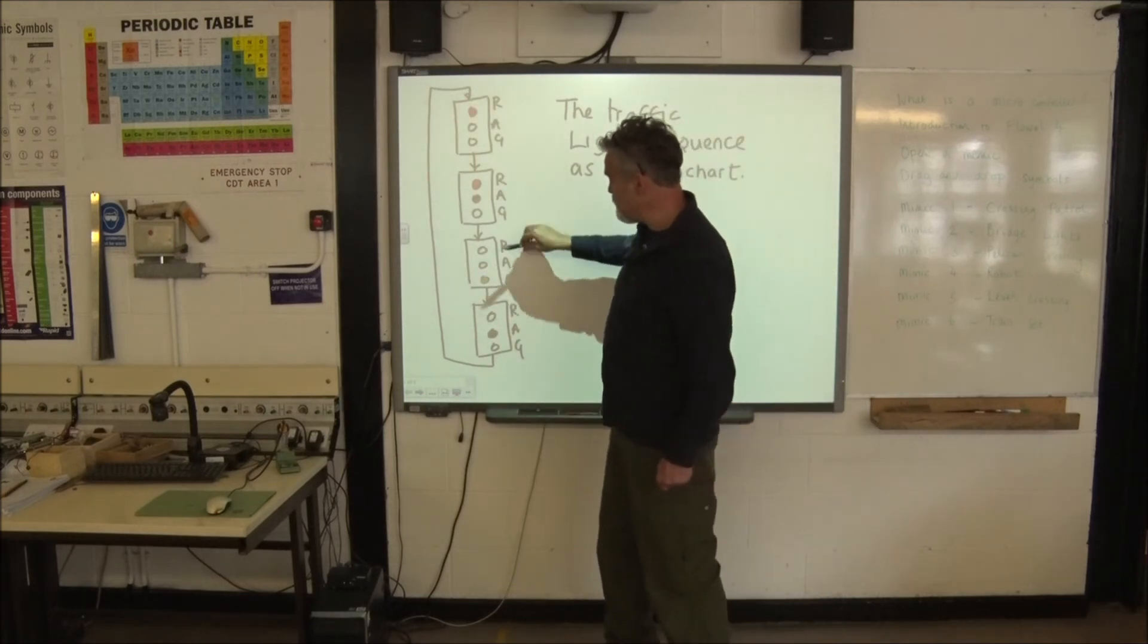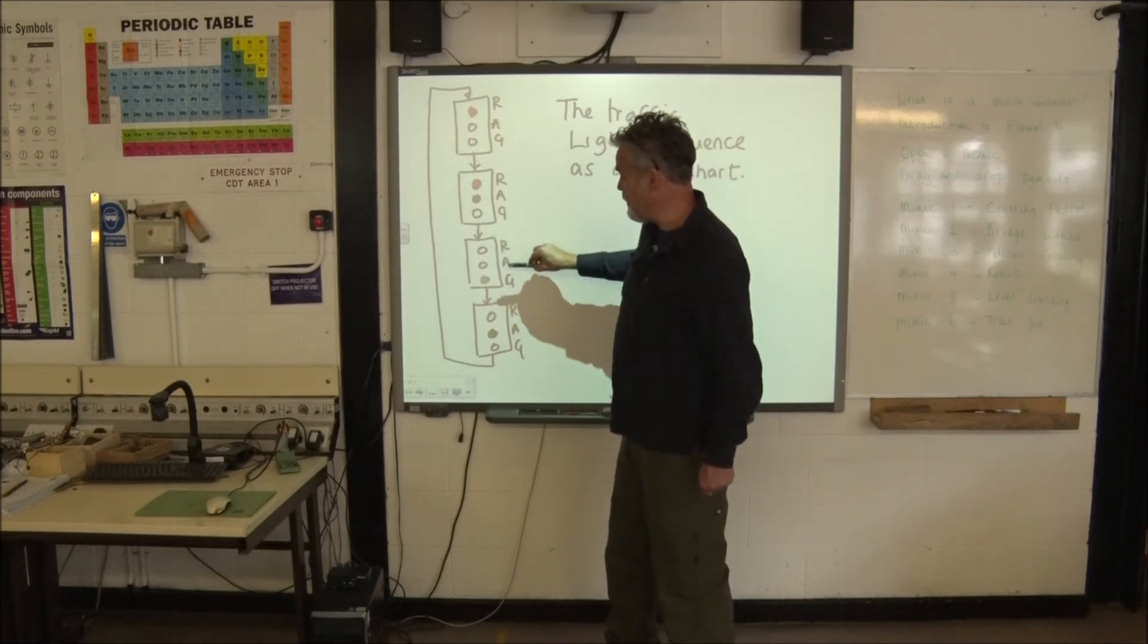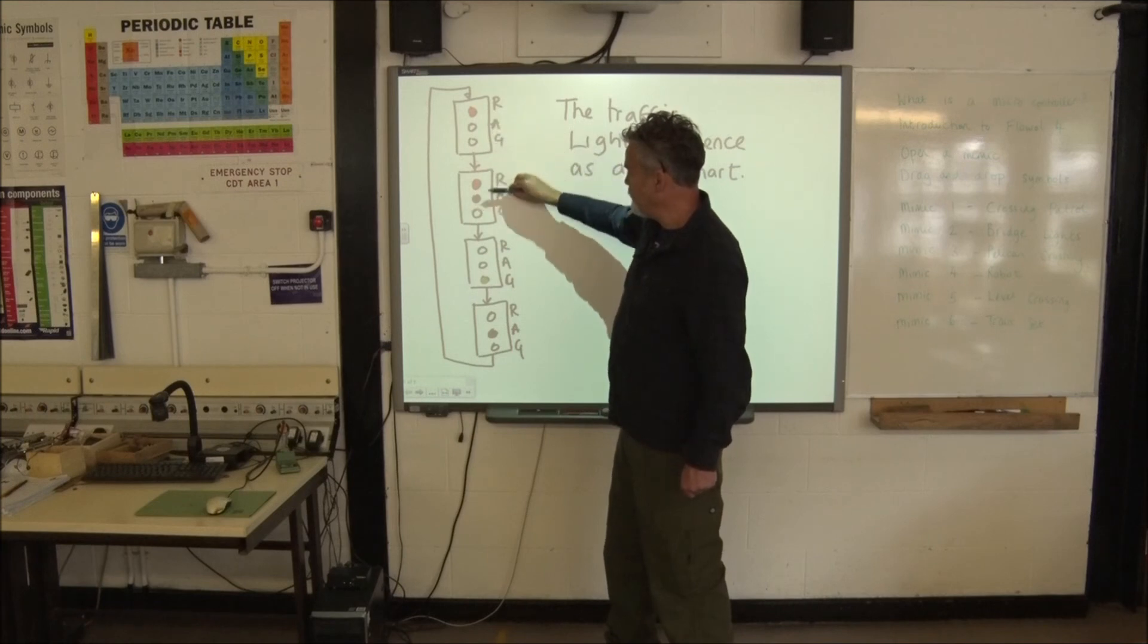So, we could start it at any point. We could start our flow chart at the start of the course of three, so we'd go to green to amber, to red, red and amber to green and so on.